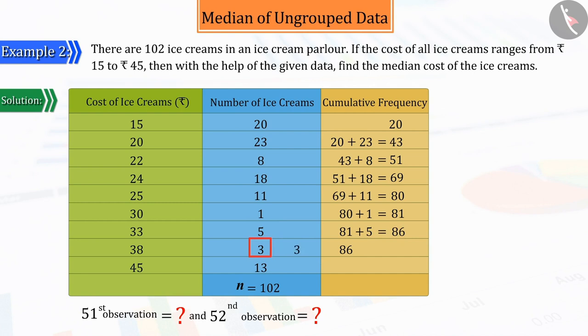Thus, a new column is formed in which the last row consists of 102 ice creams that are priced up to 45 rupees. This column is known as the cumulative frequency column.